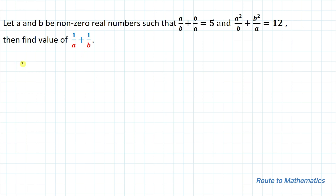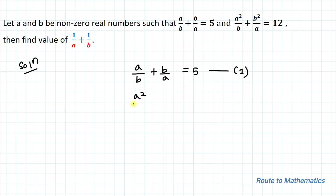Without any delay, let us start solving this problem. We have a/b + b/a = 5 — let us take it as equation 1. Our second equation is a²/b + b²/a = 12 — let us take it as equation 2.